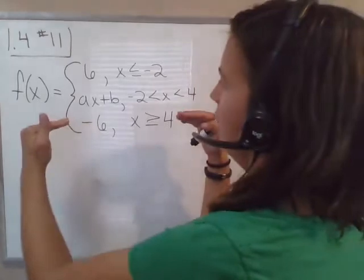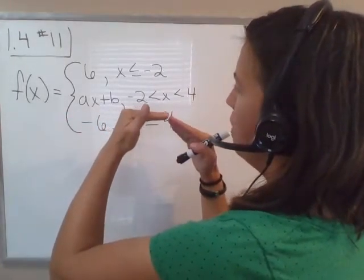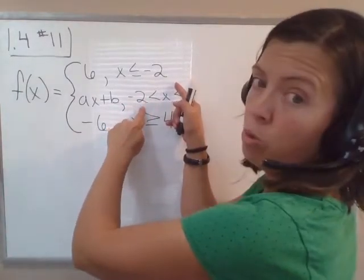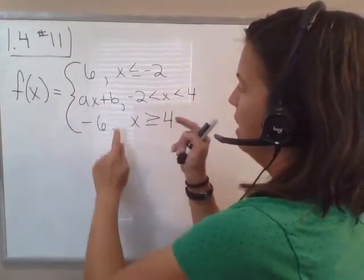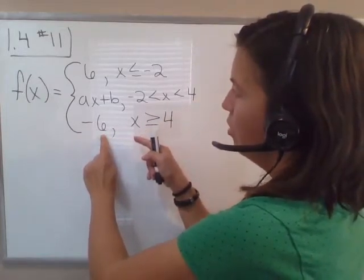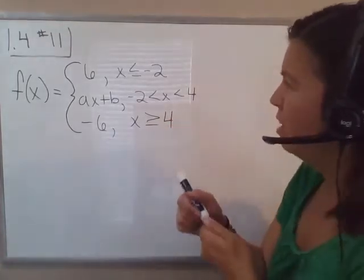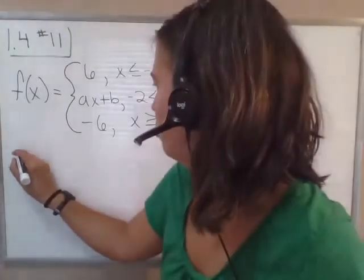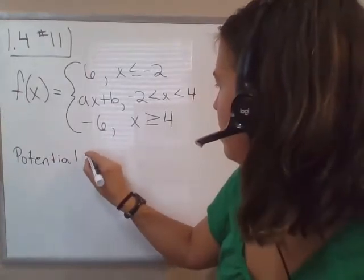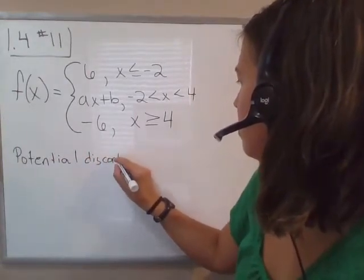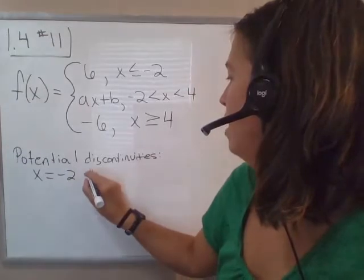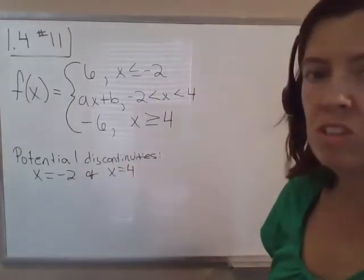What needs to happen is we need f of x equals 6 to come and meet ax plus b at the value negative 2 — we need those two graphs to meet. And then again we need ax plus b to come up and meet the graph of f of x equals negative 6 when x equals 4. So there are potential discontinuities when x equals negative 2 and when x equals 4. We need to address each of those individually.